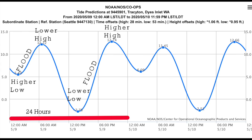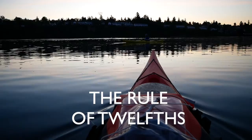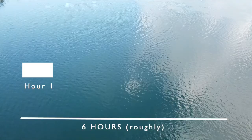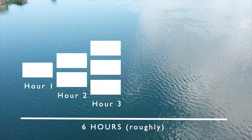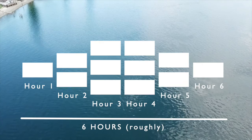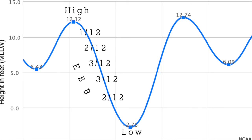Within one of those six-hour periods we can apply what is known as the rule of twelfths to have a general rule of thumb for how fast the currents will be. Within the first hour, one twelfth of the volume of water will be moving. The second hour, two twelfths. The third hour, three twelfths. The fourth hour, another three twelfths. The fifth hour, back down to two twelfths. And the sixth hour, back down to one twelfth. Less water moving means less current, and more water moving means more current. So we have less current during the first and last hour, and more current during the third and fourth hour in the middle of the tidal exchange.